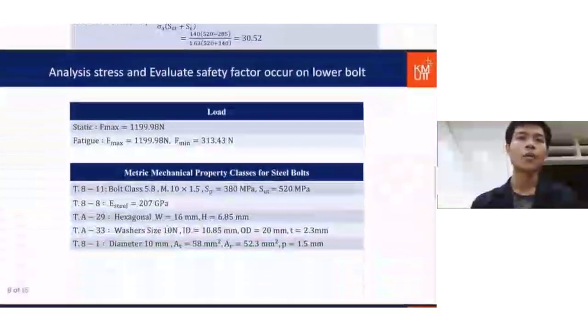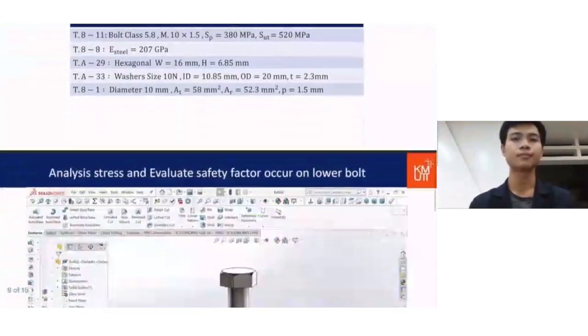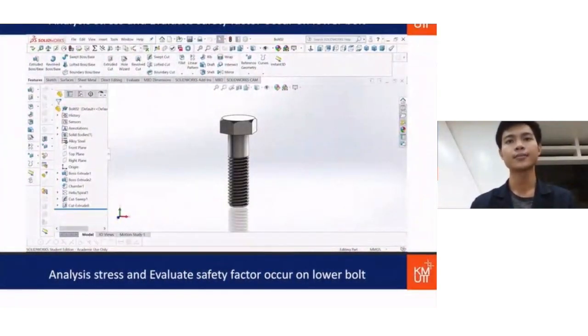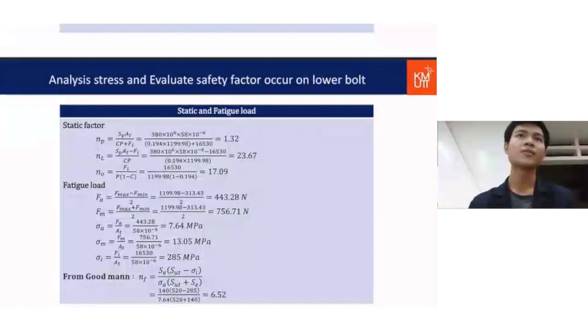The next about lower bolt analyzing process similar to the upper bolt. So we can calculate the force act on bolt about 1199.98 newton per bolt. We choose steel bolt M10 x 1.5 for another detail is according from the table. This picture is the bolt we are designed. As you can see from the screen are my calculations. The result of safety factor is according from the screen. Safety factor of yield is 1.32 and safety factor of fatigue is 6.52.